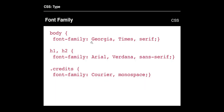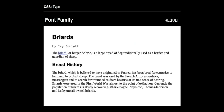Font family — you can have multiple options as fallback options. The body is going to be Georgia, Times, and serif. If Georgia doesn't exist on that person's computer, it'll be Times; if that doesn't exist, it'll be whatever serif font they have. We can override the font family with anything inside body — H1 and H2 will be Arial, Verdana, sans-serif. There's also a credits class that's going to be Courier or monospace.